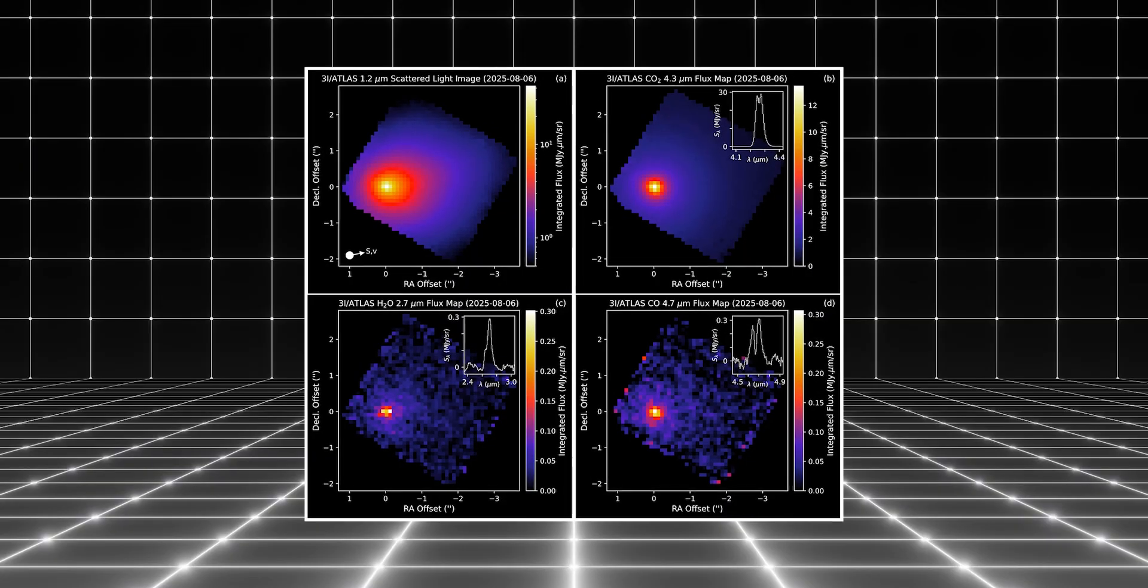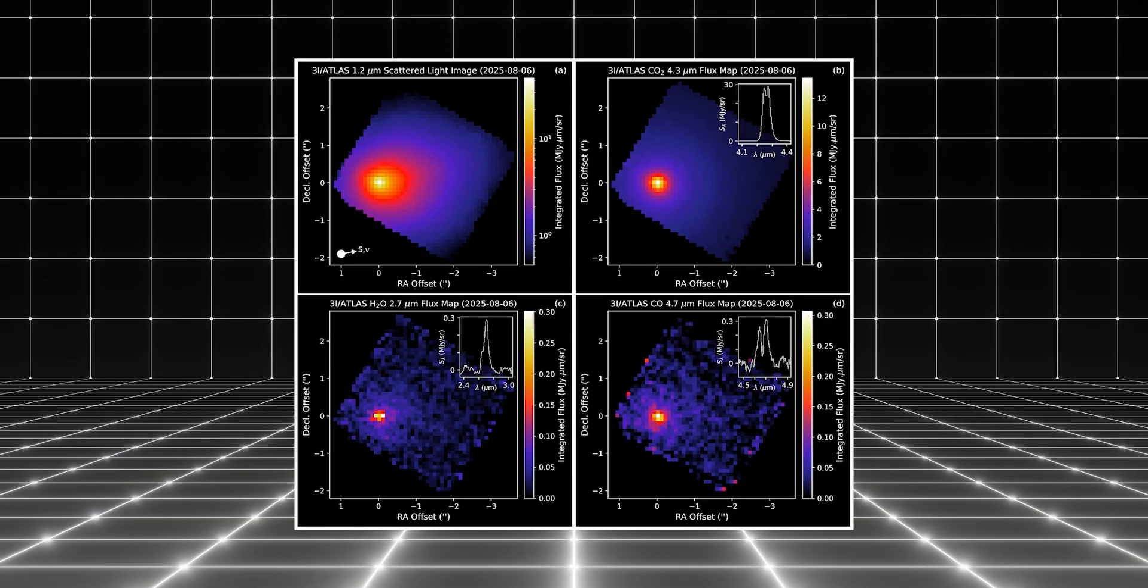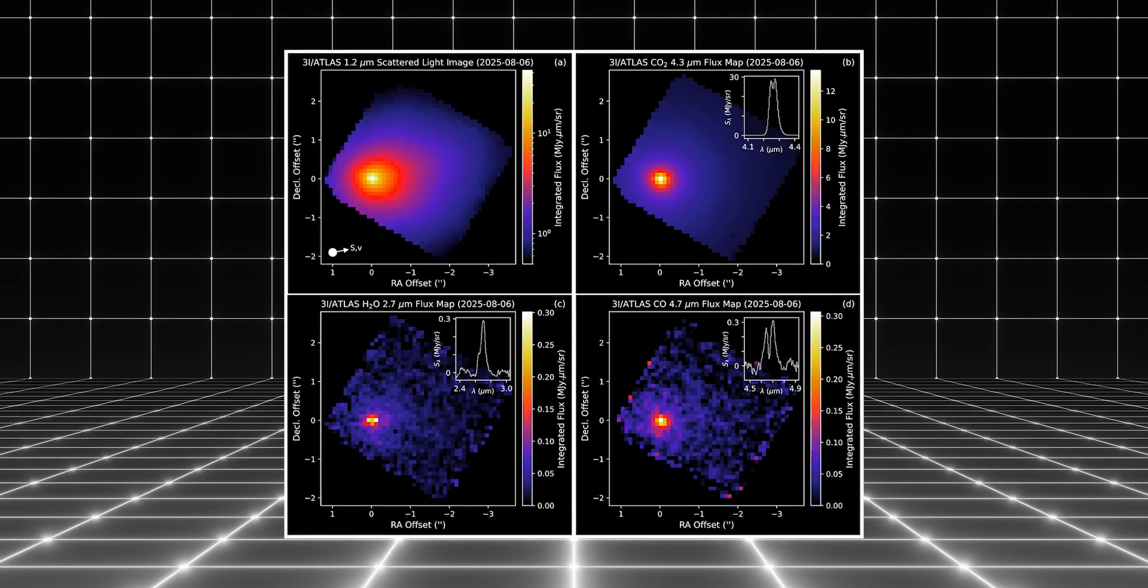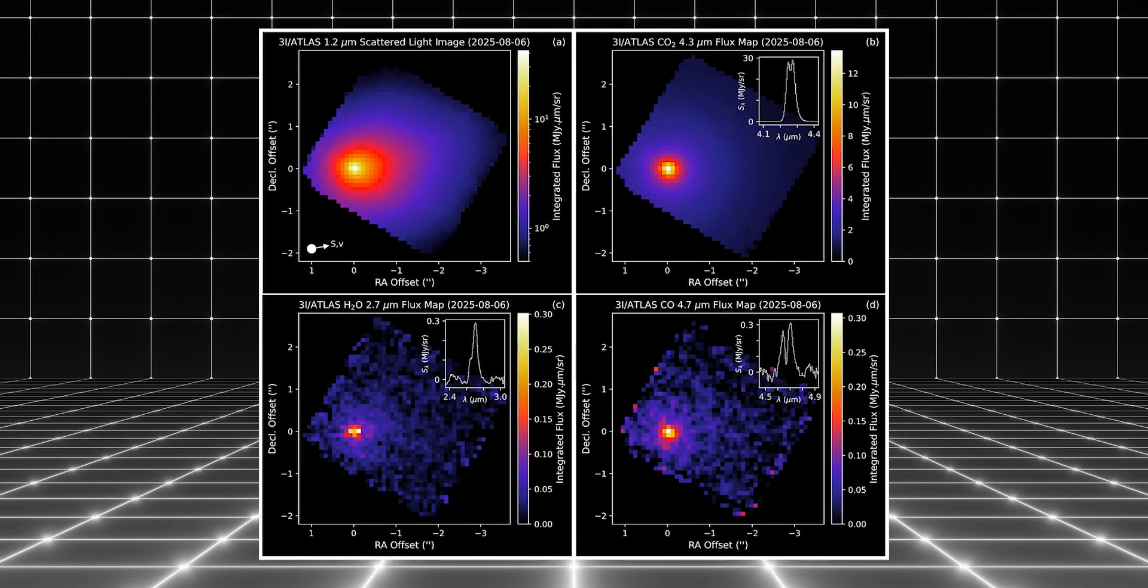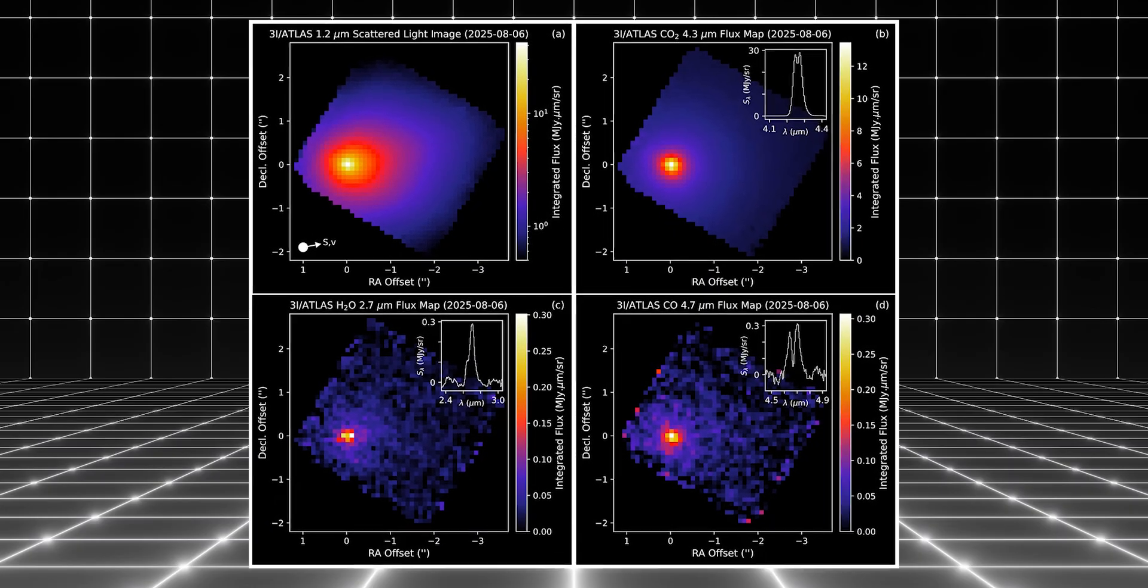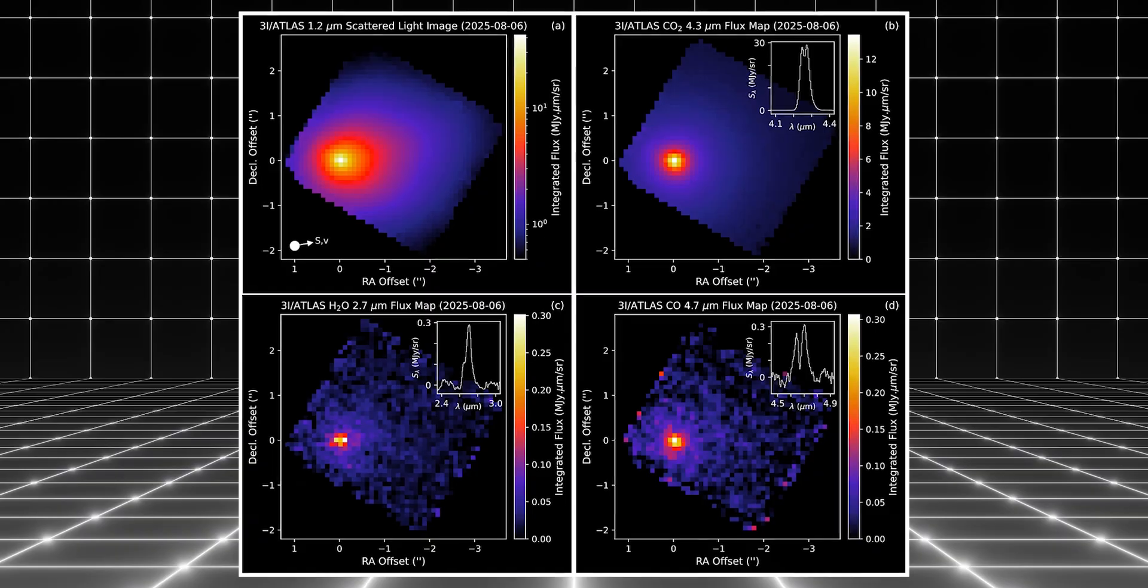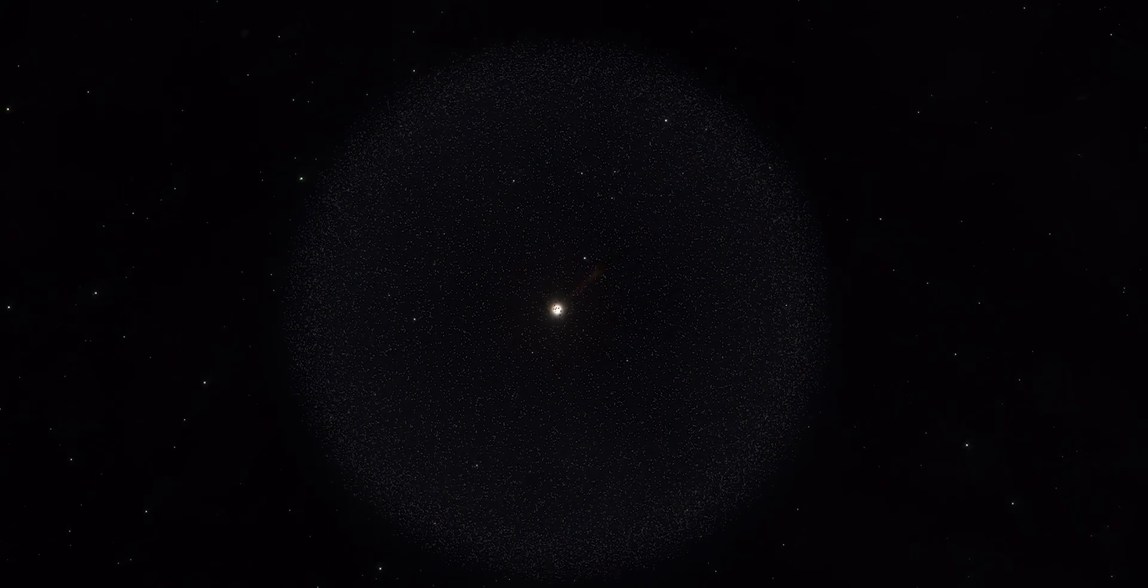The results were surprising. At that distance from the sun, most comets are dominated by water vapor. 3I Atlas wasn't. Its spectrum was ruled by carbon monoxide and carbon dioxide, while water made up only a trace. That mix hinted at a birthplace far colder than the region where our own comets formed. A frozen nursery orbiting a distant, dim star.